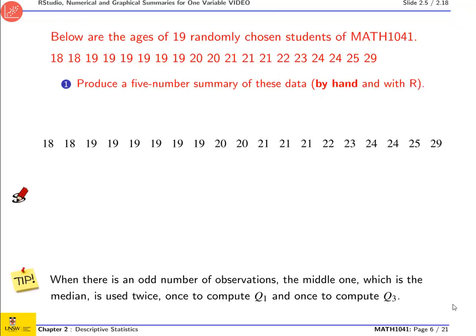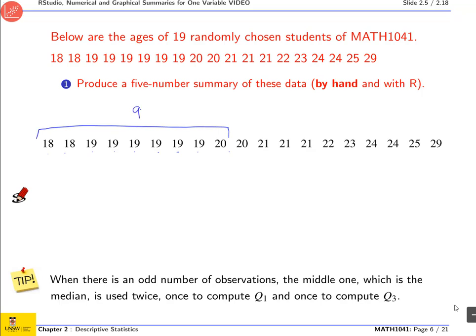Now let's do it. The first thing we do is to find the median, meaning that we're trying to split this group of 19 numbers into two groups of equal size. Well, 19 is odd, so that's impossible. But the closest thing we can do is to put nine numbers on one side, nine numbers on the other side, and then there will be a middle number which will be the median. Nine numbers there, nine numbers there, and that's my median, which is also the second quartile.